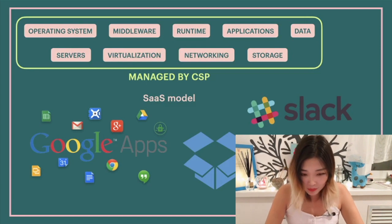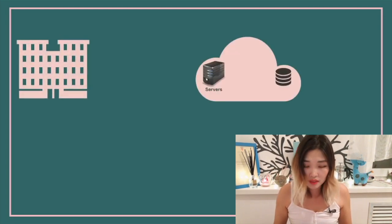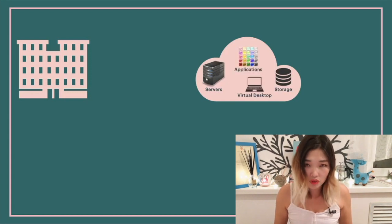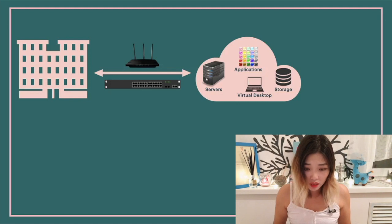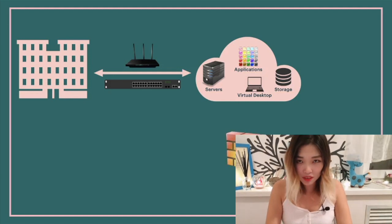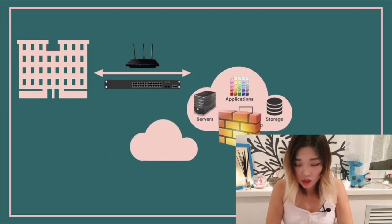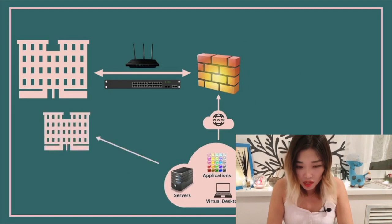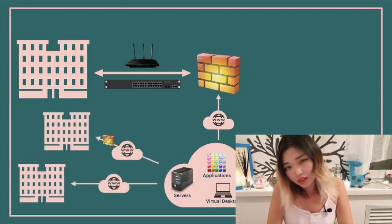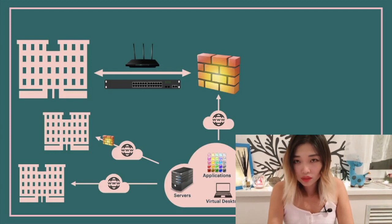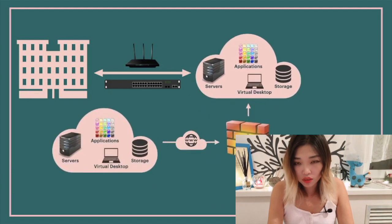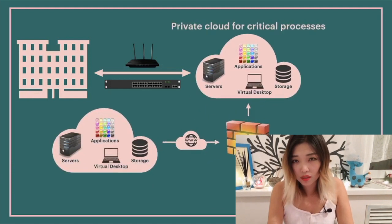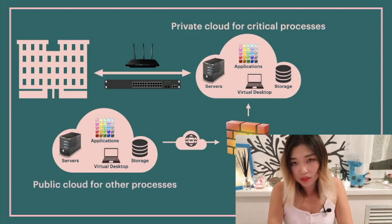Now let's consider the main deployment methods briefly. There is a private cloud, a public cloud, and a hybrid cloud. In a private cloud, a company has its own cloud infrastructure with its servers, virtual desktops, applications, and storage, usually managed by the company's IT team — giving it a higher level of security but also higher maintenance and operating costs. In a public cloud, the infrastructure is shared between multiple companies or tenants, resulting in lower security but also lower maintenance costs. In a hybrid model, a company may use private cloud for the most business-critical processes while using one or more public clouds for all other processes.